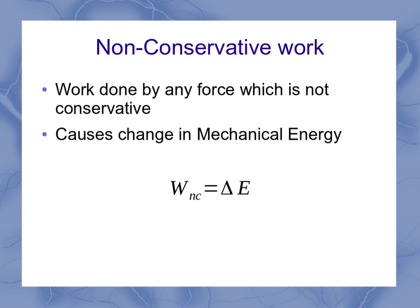Taking a quick look at this equation and expanding it out a little bit: W sub NC equals delta E. The W_NC is the work non-conservative, delta means change in, and the capital E is used for mechanical energy. In some books you might have a subscript to specify that that's mechanical energy.